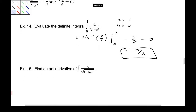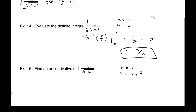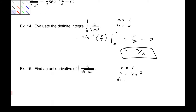Number 15: this looks like it is also in the form of inverse sine. In this case, a is 1 and u is 4x squared. Back on the previous problem we did not have to worry about the chain rule because u and x were the same variable. Now here we are going to go ahead and switch these: du is going to be 8x dx.